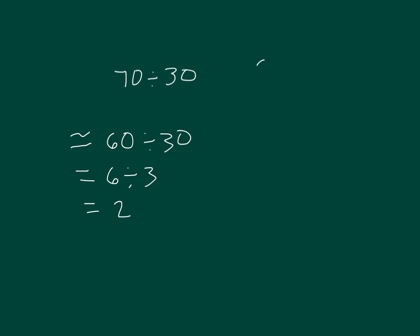When we solve the problem using the standard algorithm, we have 70 divided by 30. 30 goes into 70 two whole times. 2 times 30 is 60, and 70 minus 60 is 10. So our remainder is 10.